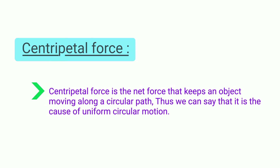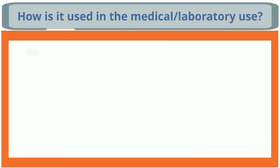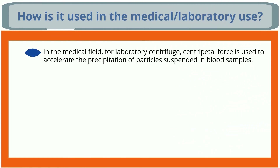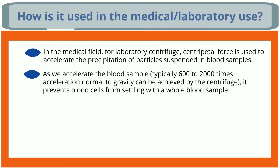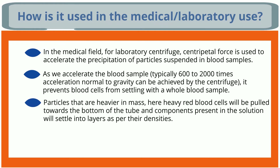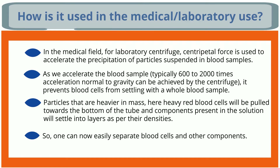Centripetal force is the net force that keeps an object moving along a circular path and is the cause of uniform circular motion. In medical and laboratory use, centripetal force is used in a centrifuge to accelerate the precipitation of particles suspended in blood samples — typically 600 to 2000 times normal gravity. This pulls heavier red blood cells to the bottom of the tube while other components settle into layers by density, allowing easy separation.